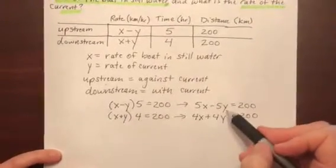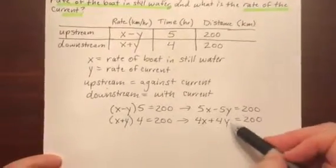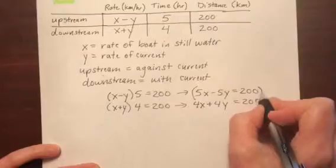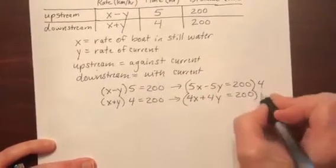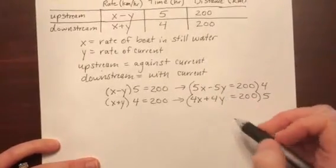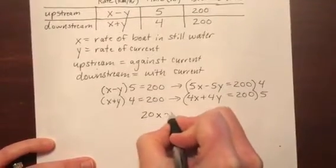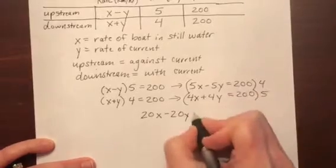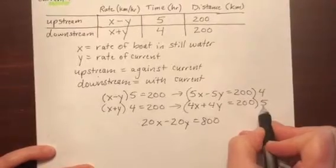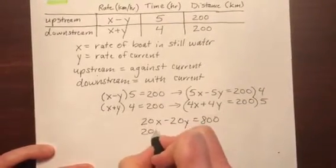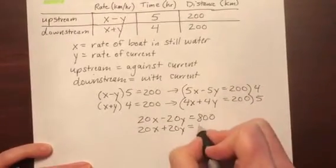I want to get the number in front of y to be the same so that these will cancel out. And so let's multiply that entire first equation by 4 and the entire second equation by 5 so that these numbers will match. So 5 times 4 would make that first equation 20x minus 20y. And then 4 times 200 is 800. The second equation, I multiply everything by 5. 5 times 4 makes 20x plus 20y. And then 5 times 200 would be 1000.